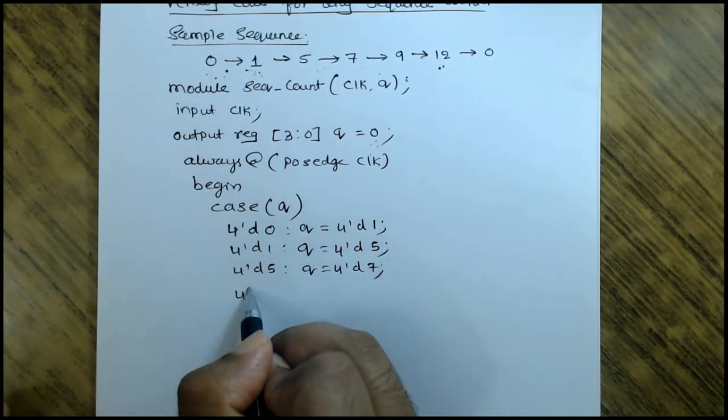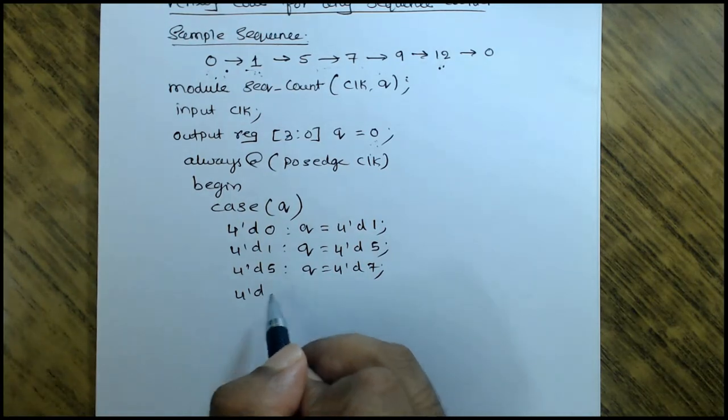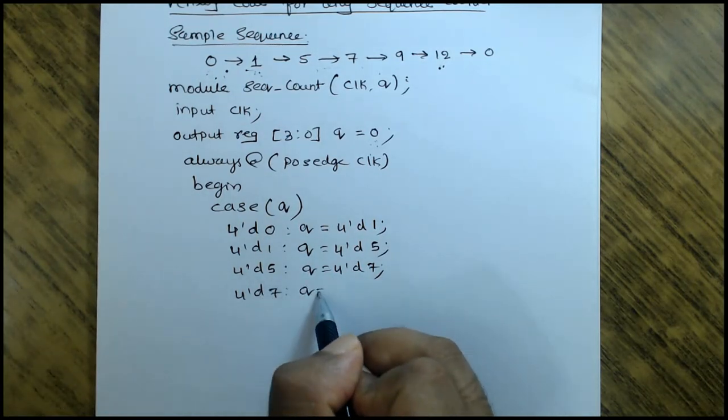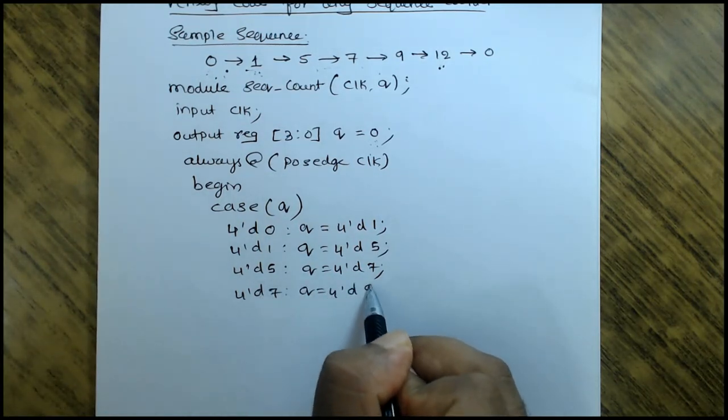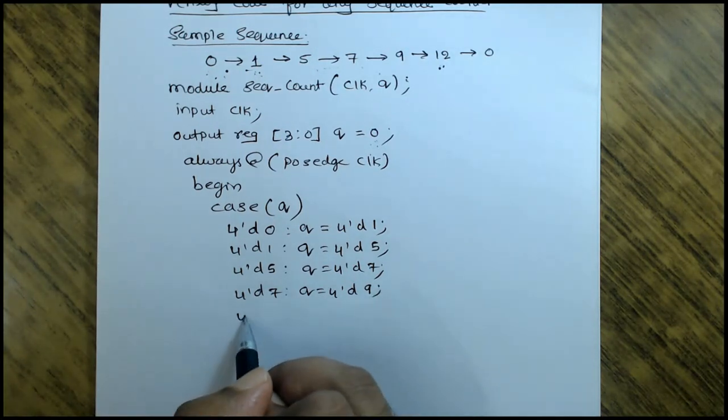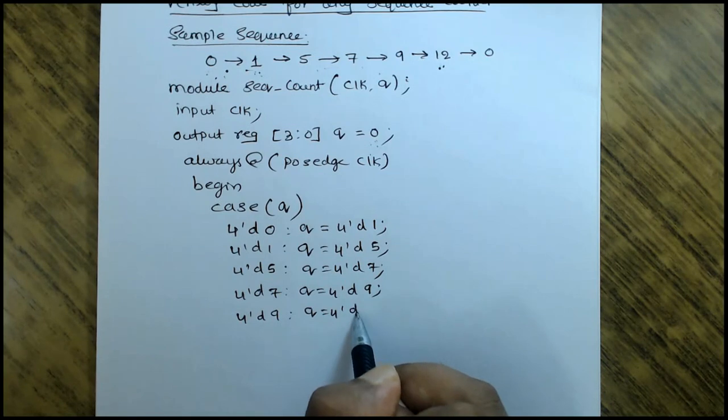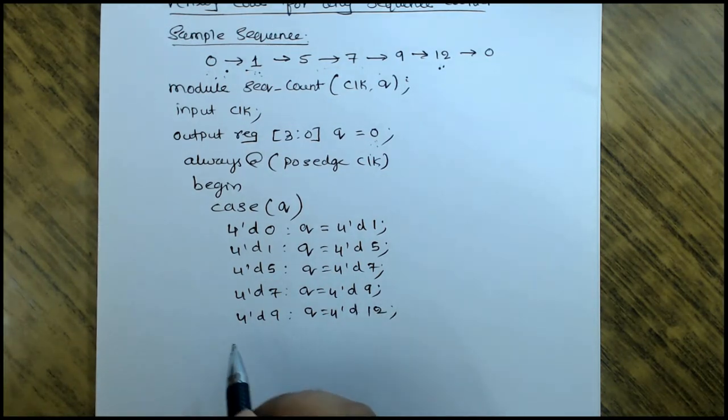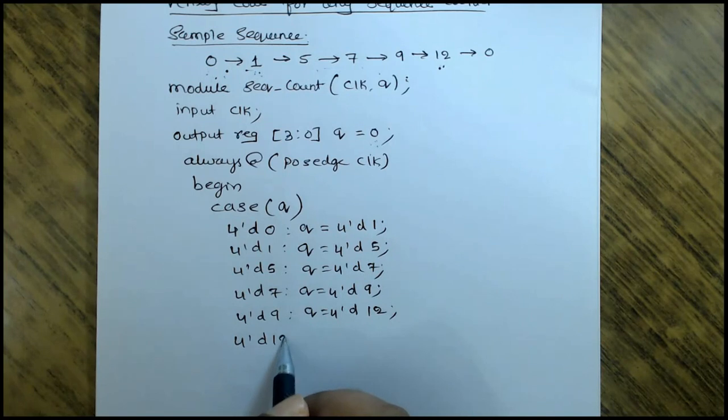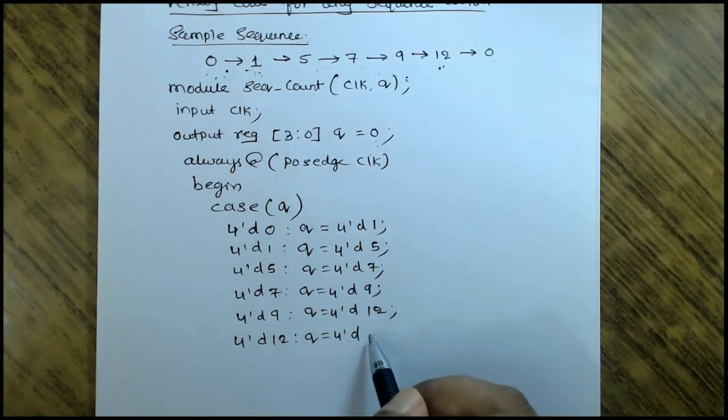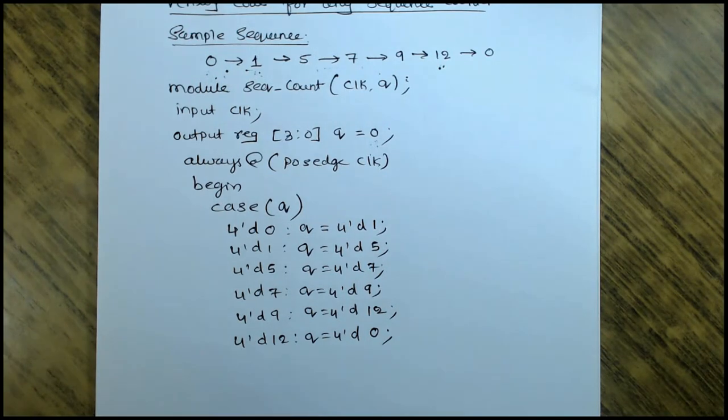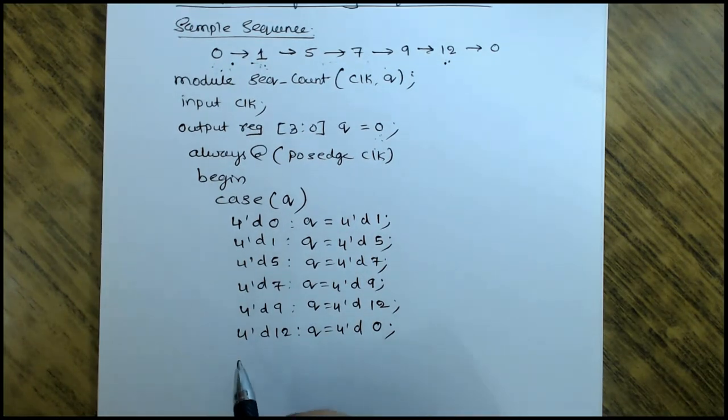When it is 7, your next state is 9. When it is 9, your next state is 12. Similarly, when it is 12, your next state is - from 12 again going back to 0. So this is the completion of it.